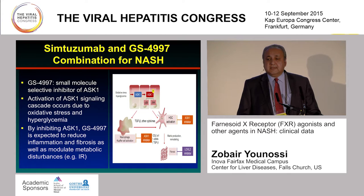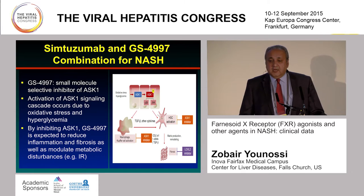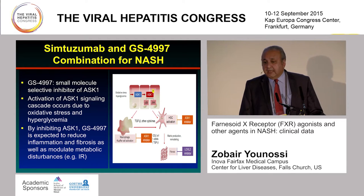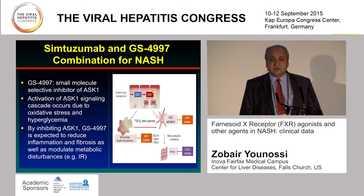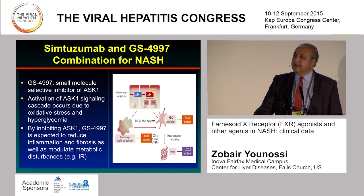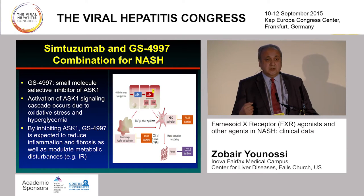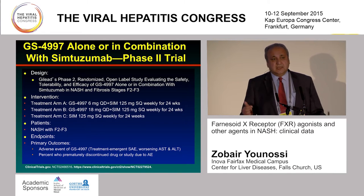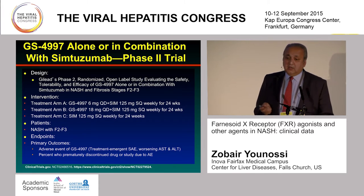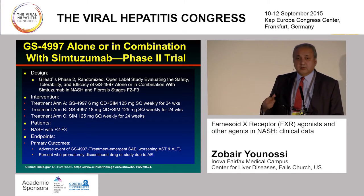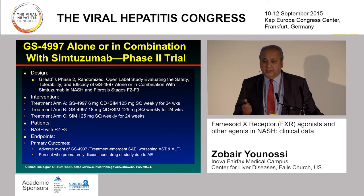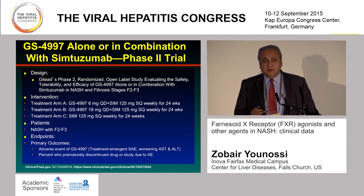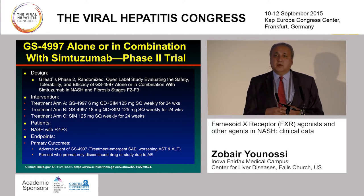The latest agent is Gilead's GS4997, a small molecule and selective inhibitor of ASK1. ASK1 is activated by hyperglycemia as well as oxidative stress — both involved in the pathogenesis of non-alcoholic steatohepatitis. By inhibiting ASK1, there is a suggestion that you can improve metabolic abnormality as well as inflammatory and fibrotic activity. Gilead has combined this with simtuzumab in a study that is now enrolling. Our site is one of the enrolling sites. The study combines the lower-dose simtuzumab every two weeks with GS4997 weekly for 24 weeks, with primary endpoints being primarily safety endpoints.